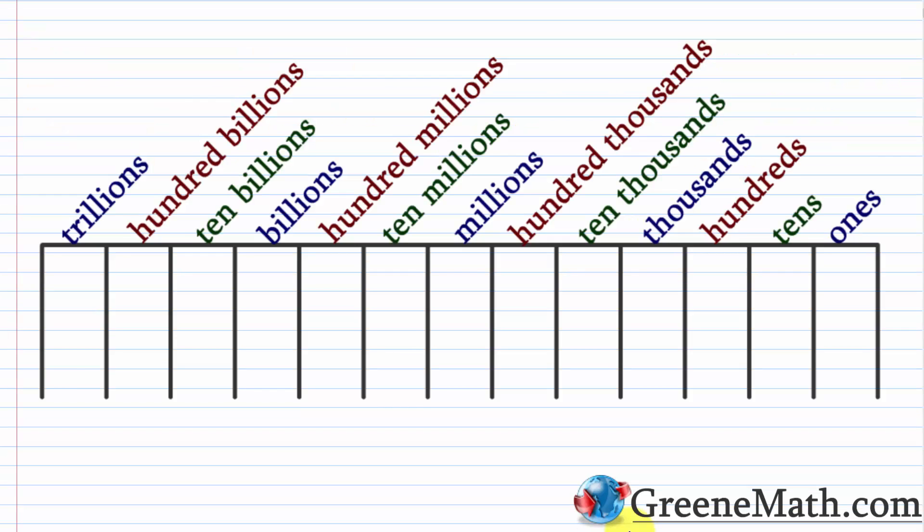In our first lesson, we learned all about place value. I taught you how to use a place value chart to find the place value for all the digits in a given number. When we think about expanded notation, all we're simply doing is writing a number in a way that emphasizes the place value for each digit. This is a continuation of the last lesson — in fact, in the first lesson I gave you a couple of examples where we wrote a number in expanded notation.